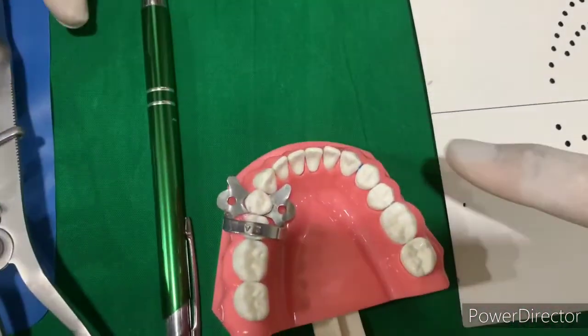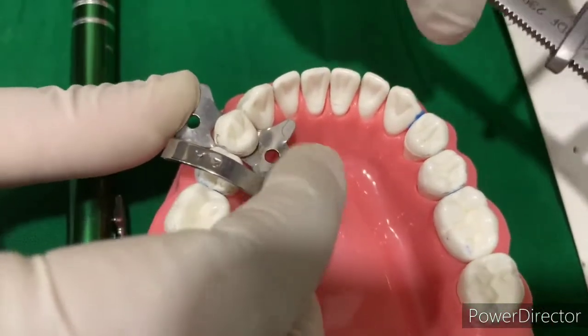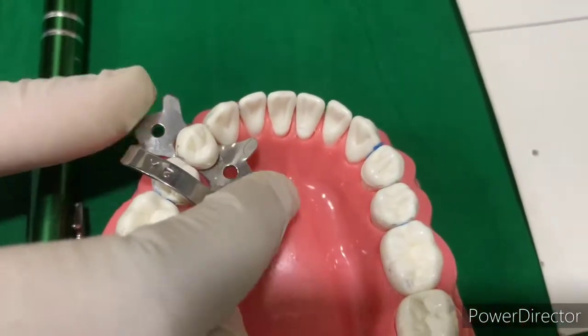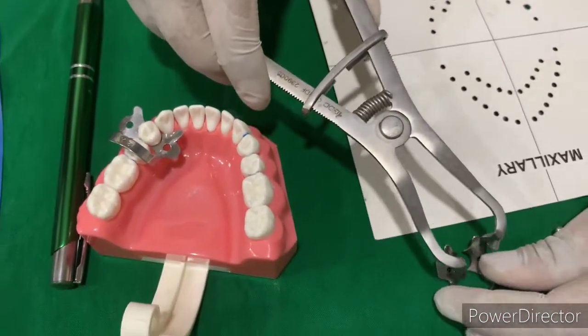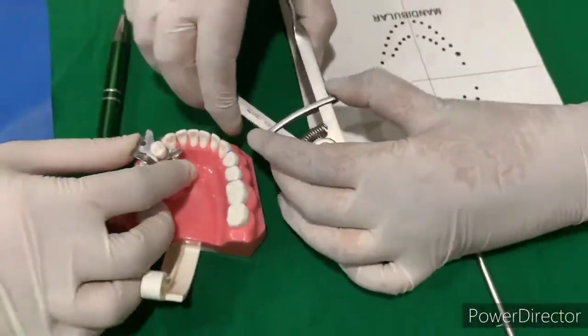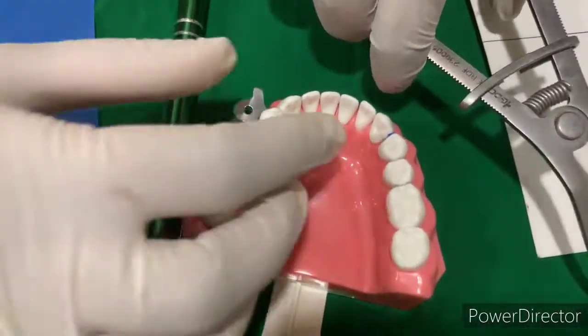We'll place the clamp on the premolar. This clamp is suitable for this tooth. It should not be rocking. It should be stable after the selection.